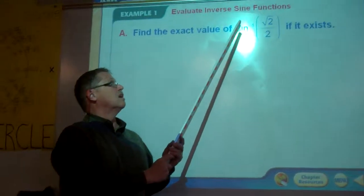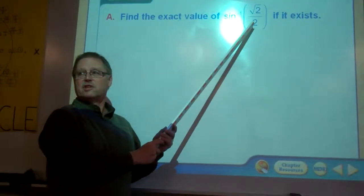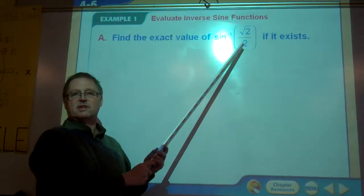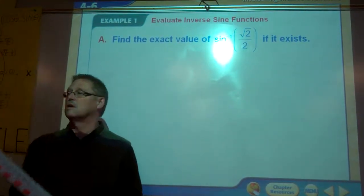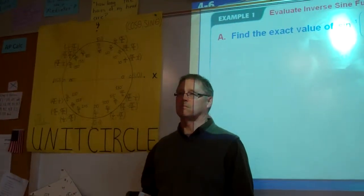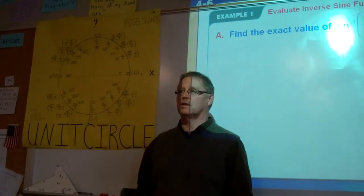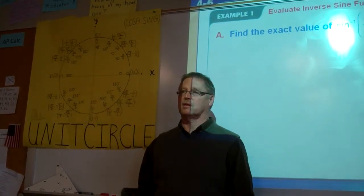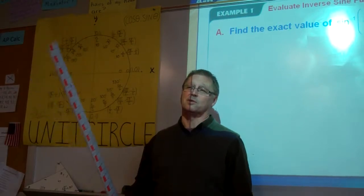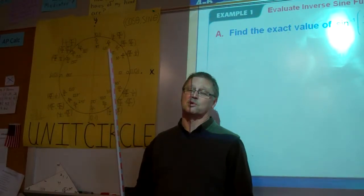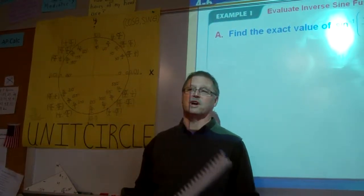Leave that in your display and now do an inverse sine, that's the shift sine, of answer or that same 0.707. If you do that, do you get pi fourths, which would be, what do you get? 0.785? Yeah. 0.785 is pi fourths. Prove it to yourself and do pi divided by 4.